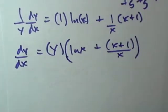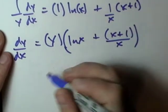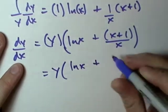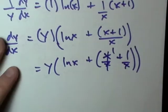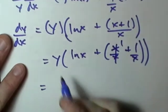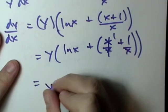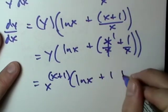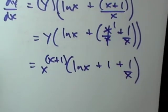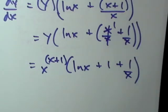We can simplify this a little more. That expression becomes x over x plus one over x, which simplifies to ln x plus one plus one over x. And remember y equals x to the x plus one, so the final answer is: dy/dx equals x to the (x plus one) times (ln x plus one plus one over x). It's kind of up to you — get with your professor and find out what type of simplification they want. It's all the right answer, just make sure you're leaving it in the form they want.